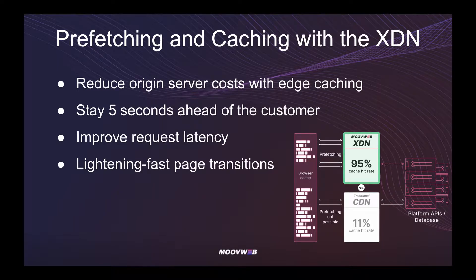Caching and prefetching are two important factors to consider when evaluating your site's performance. With the XDN, you can reduce origin server costs by leveraging caching while also remaining five seconds ahead of the customer with prefetching at the edge.